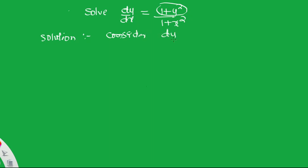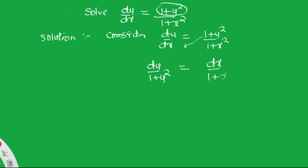Consider dy/dx = (1 + y²) / (1 + x²). By cross multiplication, bringing (1 + y²) to the denominator on the left: dy / (1 + y²) = dx / (1 + x²). Now we need to integrate both sides.